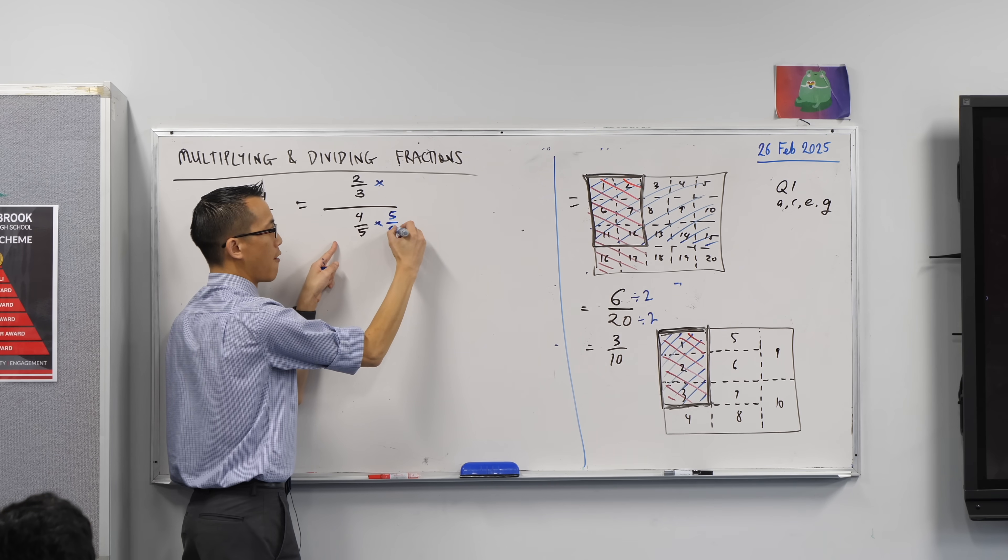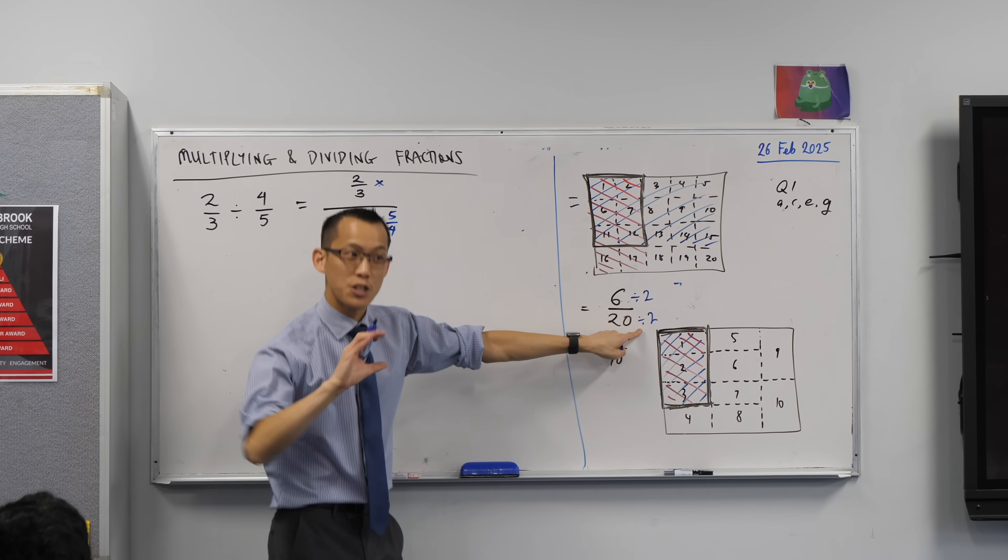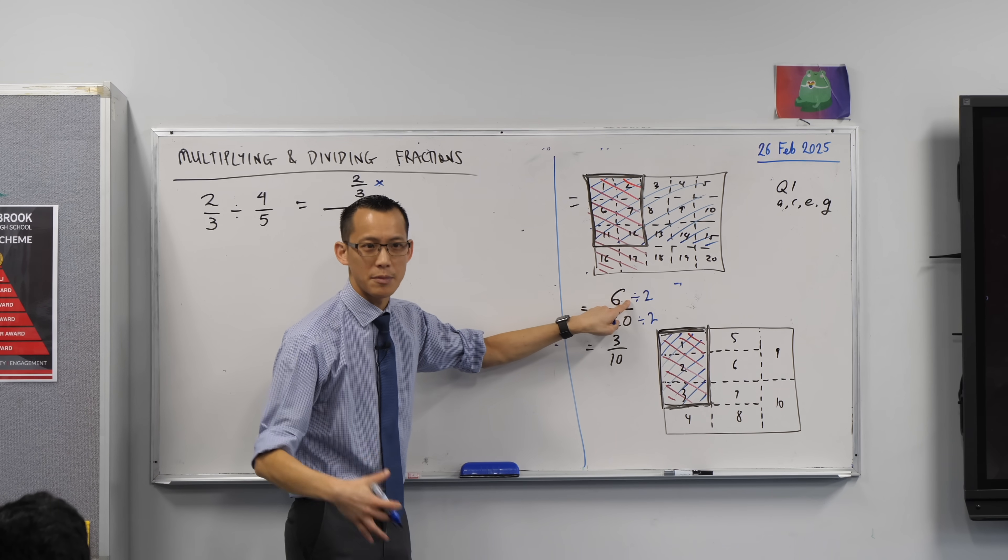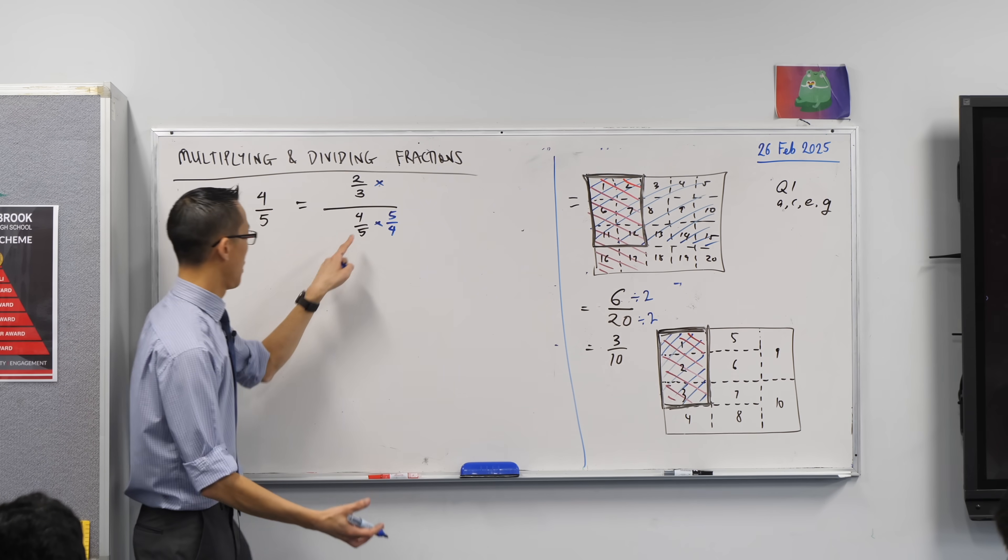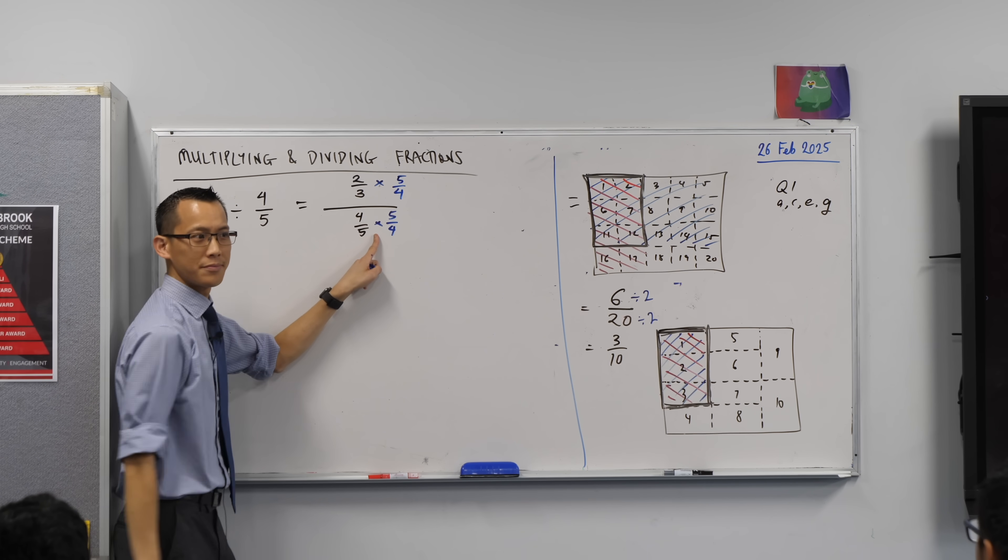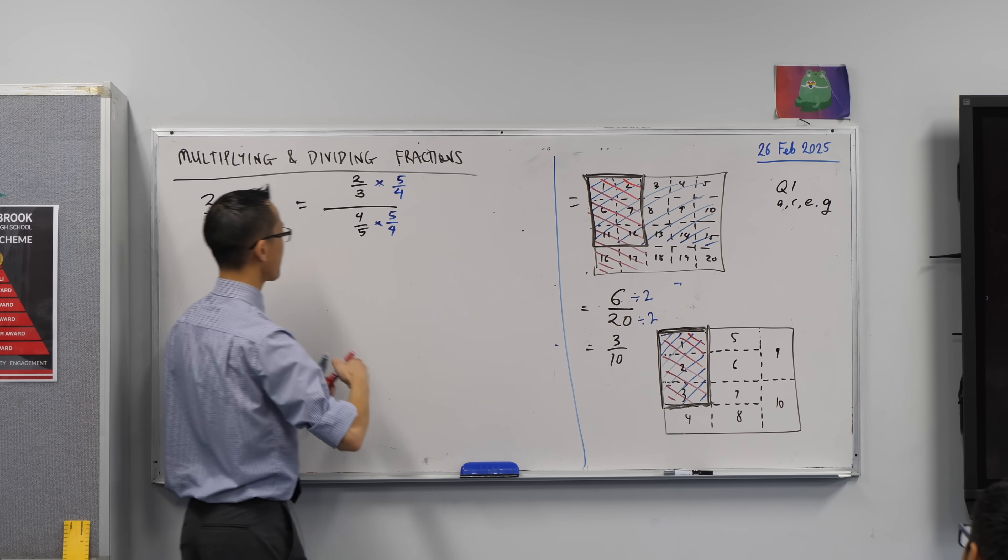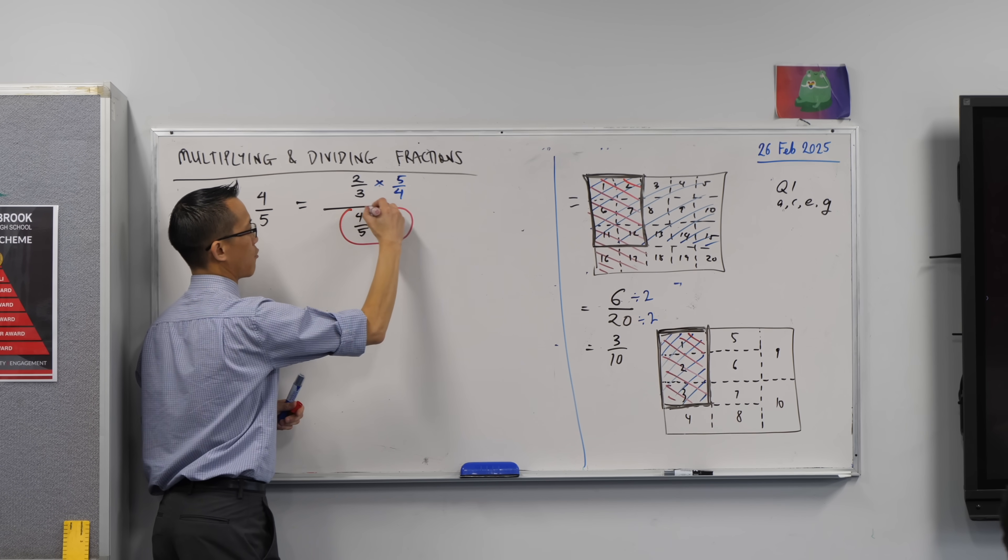5 over 4. Now if I multiply the bottom by something, if I do something to the bottom, I've got to do the same thing to the top. Do you agree? So here's this multiplication. I'm going to do the same on the top, right? You can follow this along with me if you have another colour. It's often helpful.